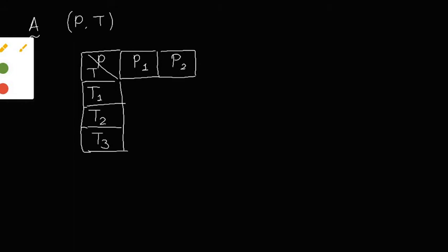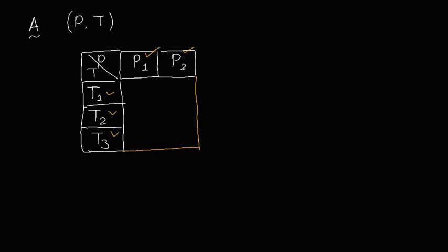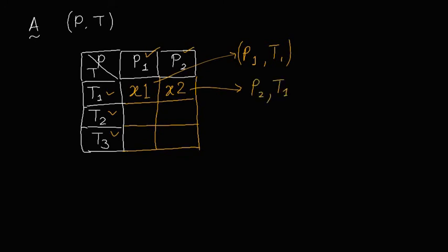Now what we would do here is for this P1 and P2 and T1, T2, T3, we will get six points. Let us call this as point X1, this is X2. X1 represents a pair which is P1 and T1. Similarly X2 represents P2 and T1.